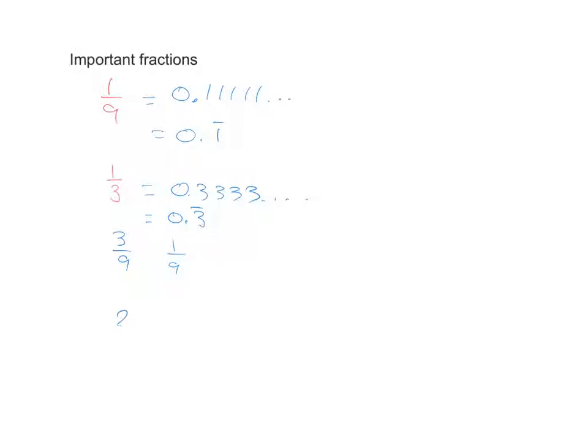If you ended up coming across 2 thirds, it's just 0.33333333 times by 2, which makes it 0.666666666 repeating, which is 0.6 with a line over top.